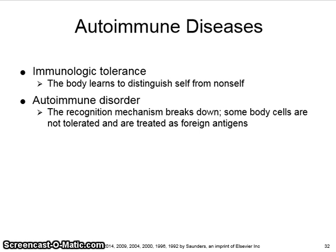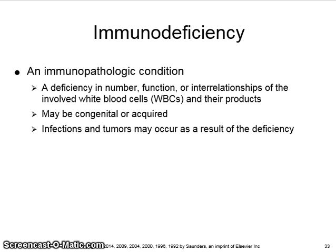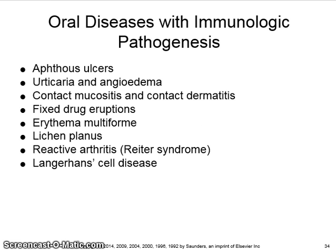Several autoimmune diseases have oral manifestations and are described in this chapter. An immunodeficiency is an immunopathologic condition — a deficiency in number, function, or interrelationships of involved white blood cells and their products. It may be congenital or acquired. Infections and tumors may occur as a result of the deficiency. Oral diseases with immunologic pathogenesis include apthous ulcers, urticaria and angioedema, contact mucositis and contact dermatitis, fixed drug eruptions, erythema multiforme, lichen planus, reactive arthritis (also known as Reiter syndrome), and Langerhans cell disease.